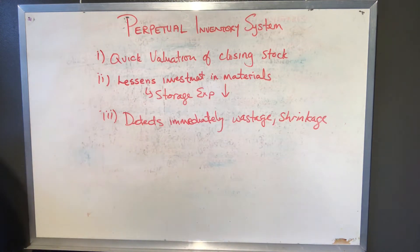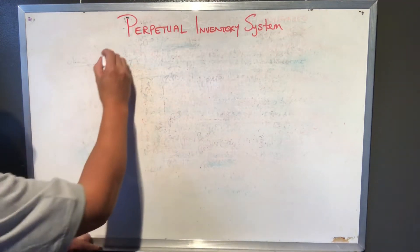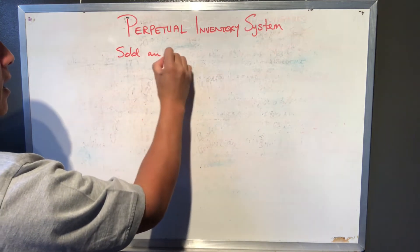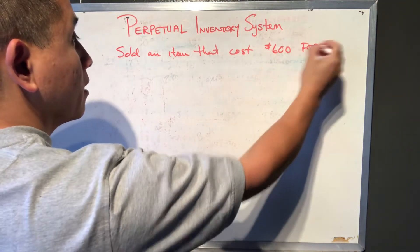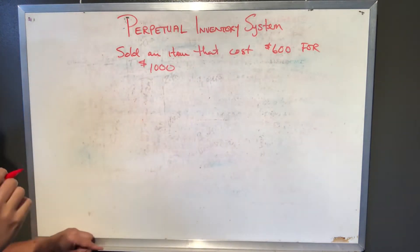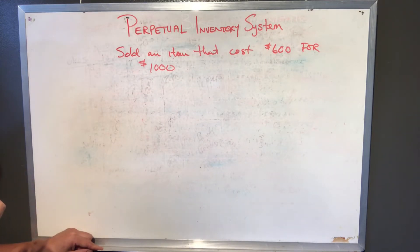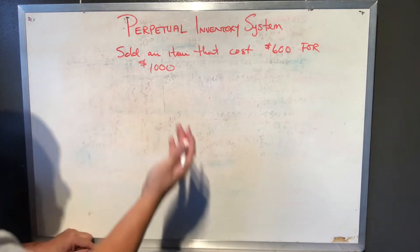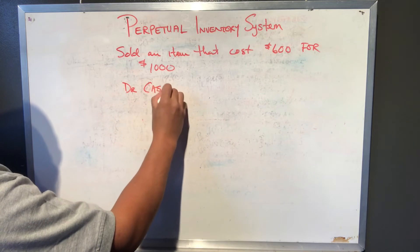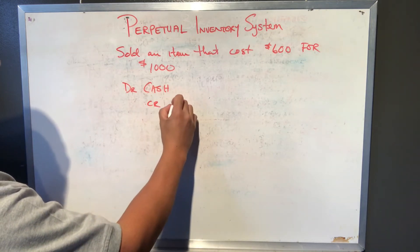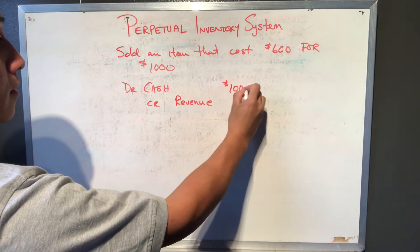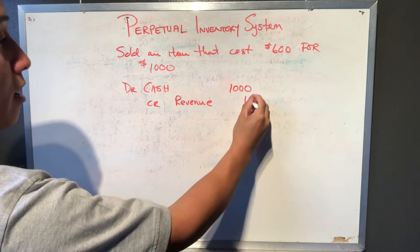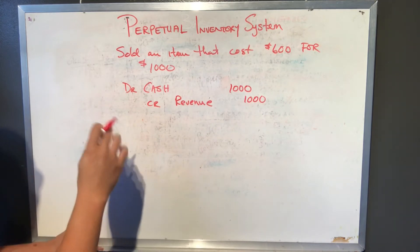Let's run through a numerical example. Let's say that we sold an item that cost six hundred dollars for one thousand dollars. Under the perpetual inventory system it's always up to date, so it's a dual journal entry. In this case, let's say that we sold it and received cash for it — so it'd be debit cash, and because we sold it we earn that revenue, so we credit revenue for the one thousand dollars.